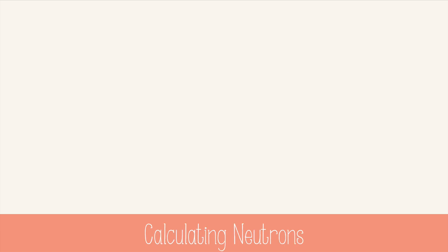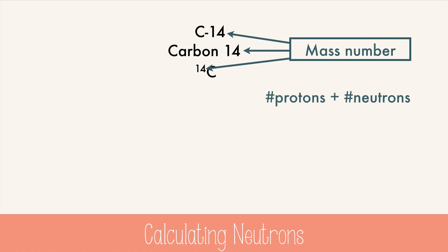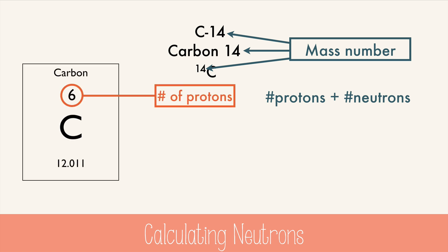Often times you'll see an element symbol with a number like C14, or carbon 14, or C with a 14 superscripted. These numbers are telling you the mass number, which is the number of protons plus neutrons. If you know the number of protons, which you can look up on the periodic table as the atomic number, then you can do a little subtraction.